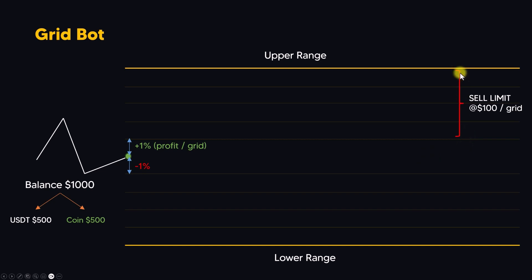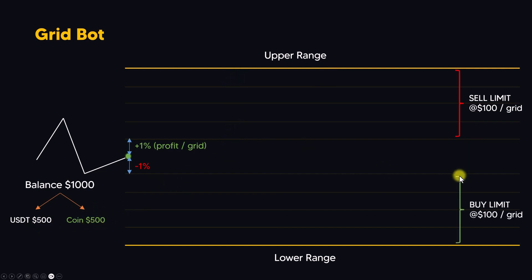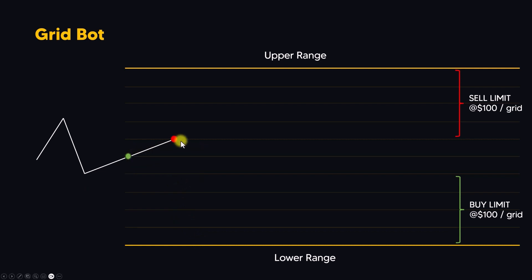Then the bot will create a sell limit order on each grid. Each grid order is 100 USDT. There are five upper grids. Each grid order is 100 — if the price increases, the bot will sell 500 worth of coins five times. The bot also creates buy limit orders below the current price, each order is 100 USD, so if the price goes down the bot will purchase five times until it reaches the lower range.